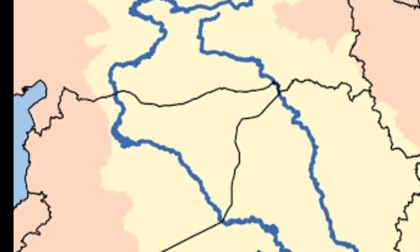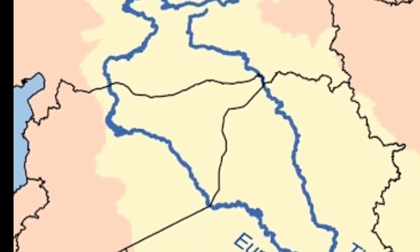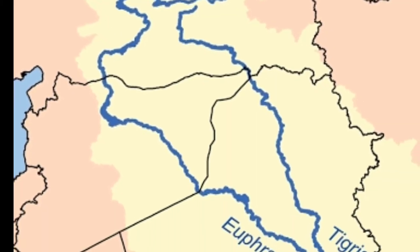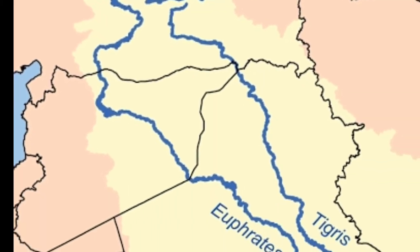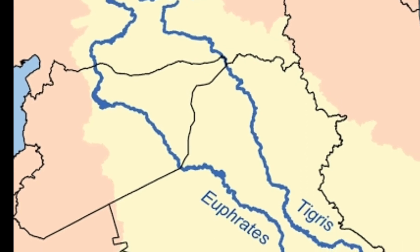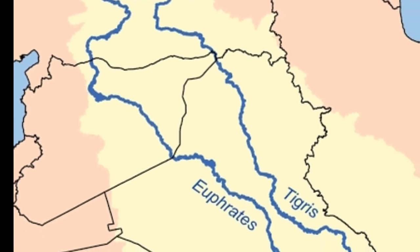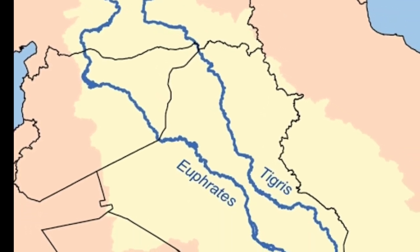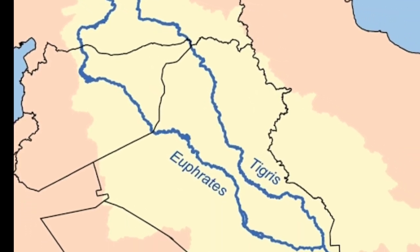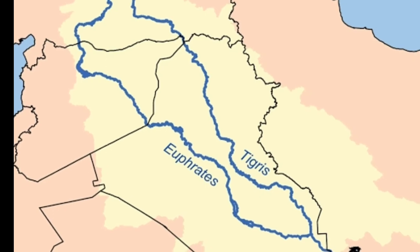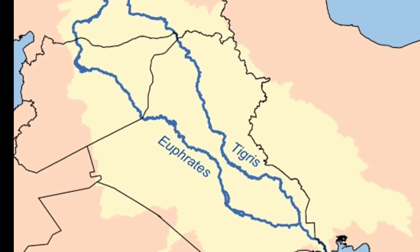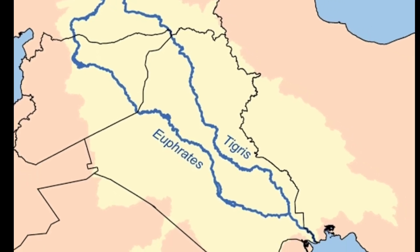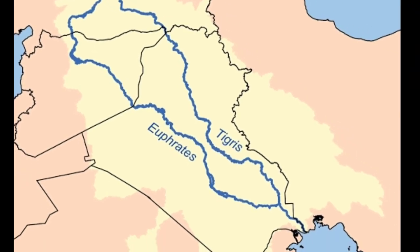Mesopotamia in West Asia. The word Mesopotamia came from the Greek words Meso and Potamos, which means 'between' and 'river' respectively. Hence, Mesopotamia is sometimes referred to as the land between two rivers.